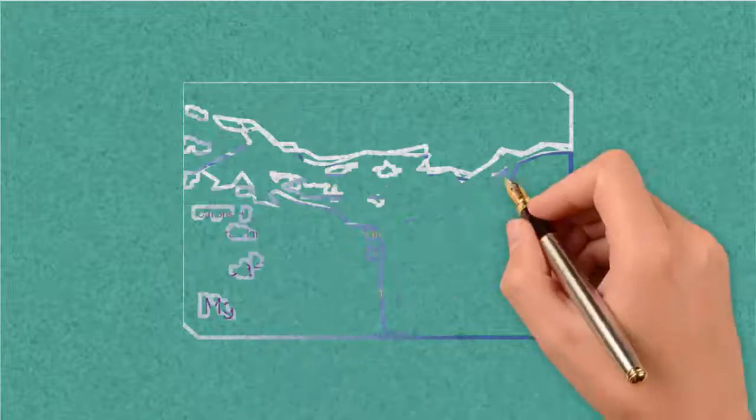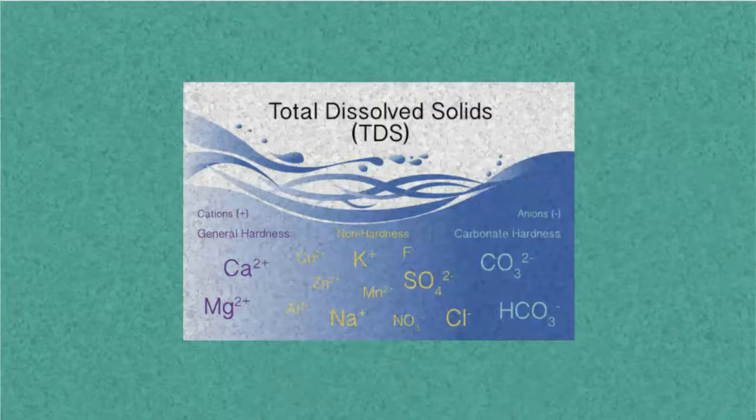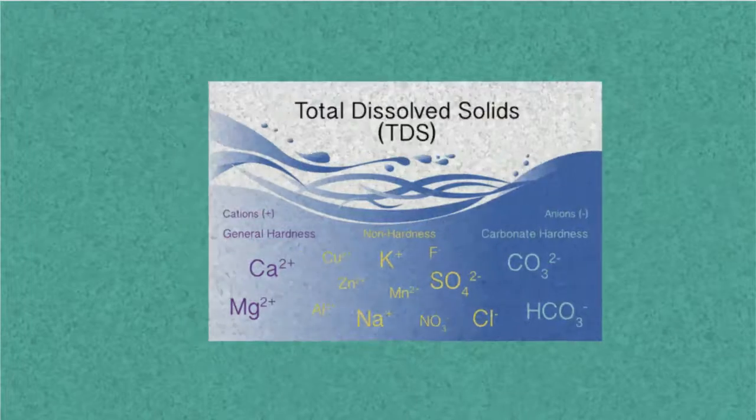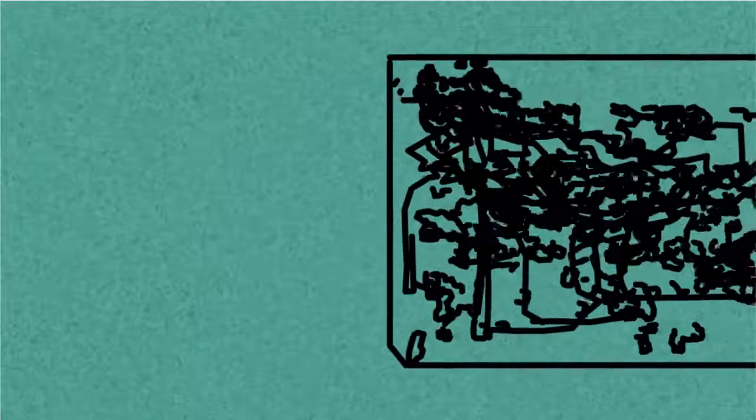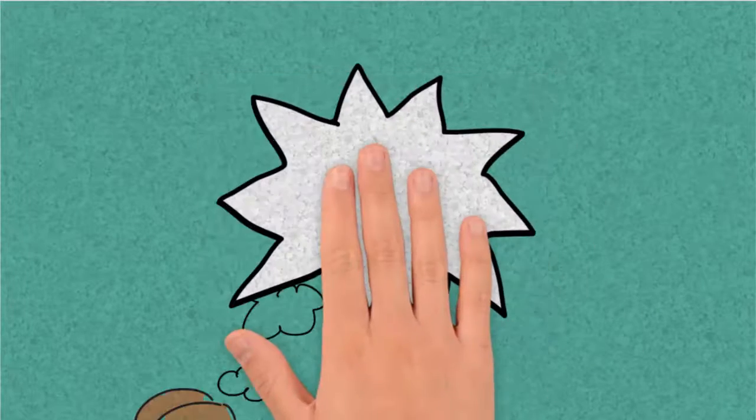The principal constituents are usually the cations: calcium, magnesium, sodium and potassium, and the anions: carbonate, bicarbonate, chloride, sulfate and particularly in groundwater nitrate.